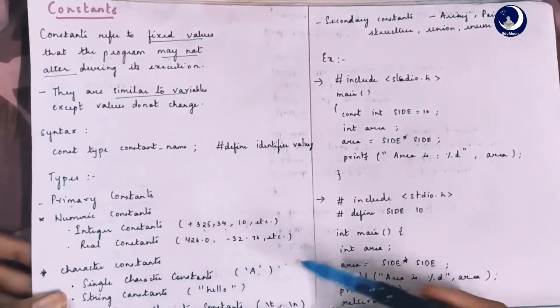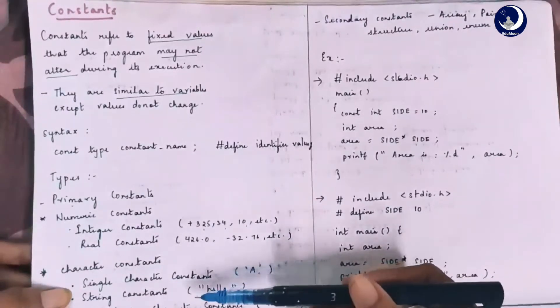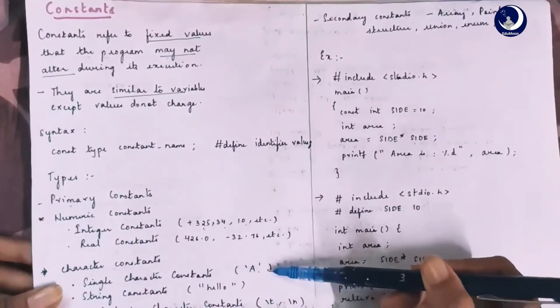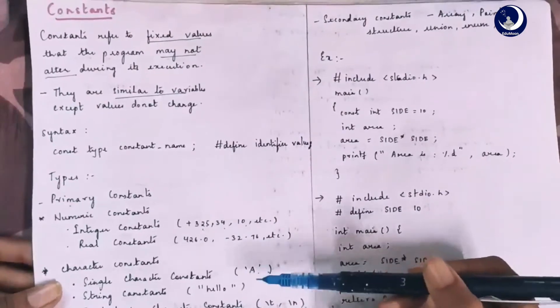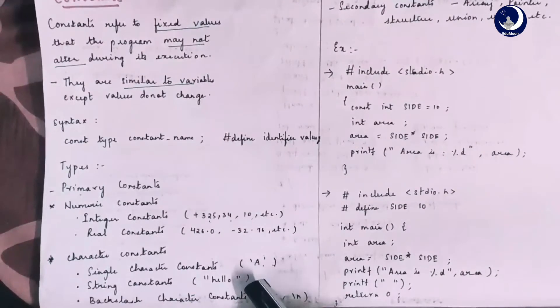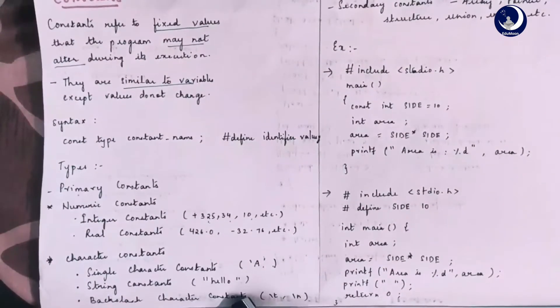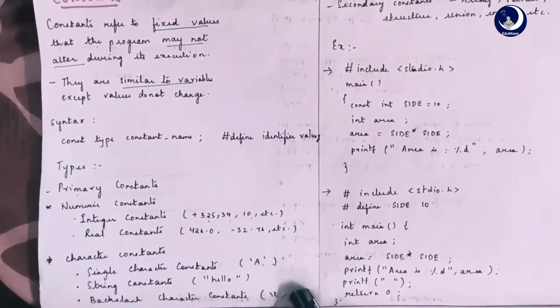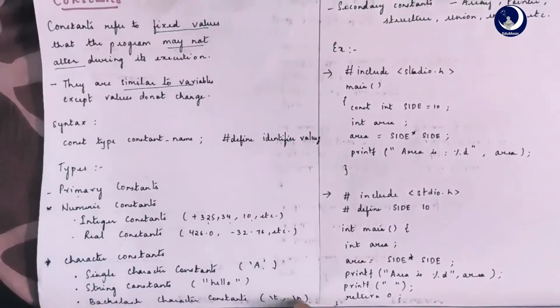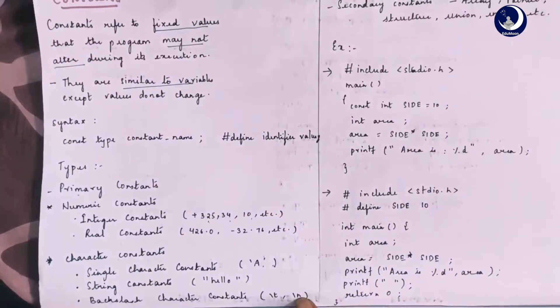Character constants are those which have single character constants, string constants and backslash character constants. Single character constants are usually alphabets. String constants have a sequence of characters. Backslash character constants have a backslash followed by a character. Here, slash t refers to a tab space and slash n refers to a new line.